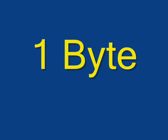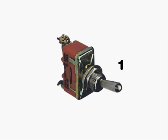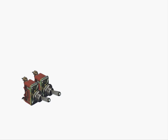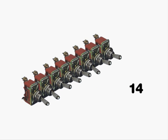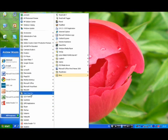Simply put, a byte is a unit of computer memory. It is made up of eight components called binary digits, or bits. Each bit is like a microscopic little switch that can be on or off, just like a light switch, and we can think of this as being a nought or a one. Therefore, if you know how to count in binary, a bank of eight switches, or one byte, has 256 possible combinations.